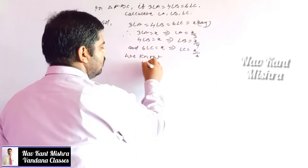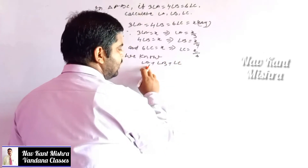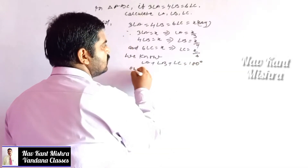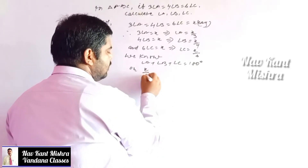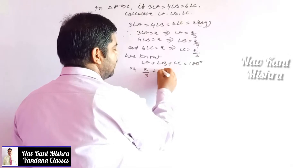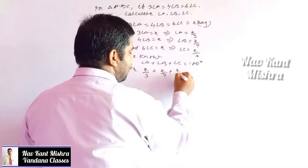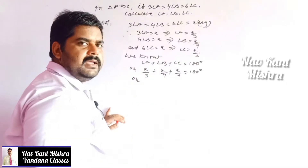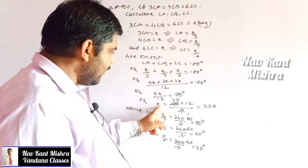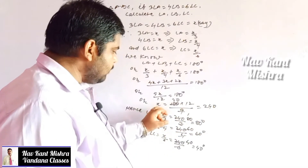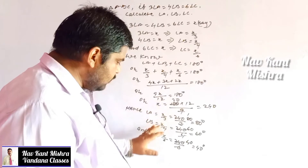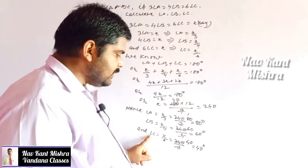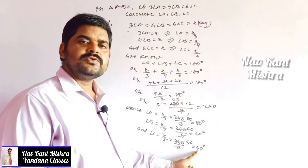We know the sum of all angles of a triangle is 180 degrees. So angle A + angle B + angle C = 180°. Substituting: x/3 + x/4 + x/6 = 180°. After simplification, x = 240. Therefore, angle A = 80°, angle B = 60°, and angle C = 40°.